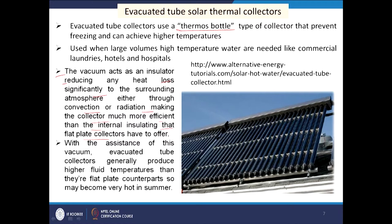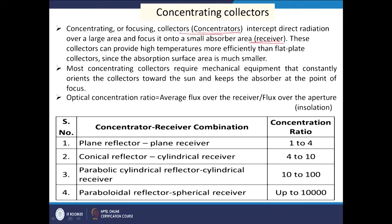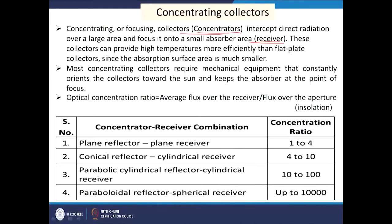Concentrating collectors are the latest development. Sun rays after incidence are directed and focused on a certain point or central line, so the concentration of radiation is higher at the receiver. There are two main components: the concentrator, which collects the sun rays, and the receiver, which receives the focused rays at a focal point. Depending upon the shape of these concentrators and receivers, the extent of concentration varies.